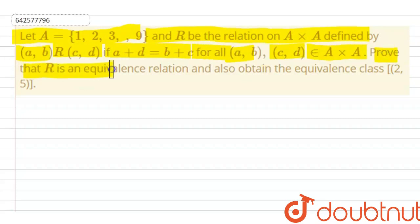We have to prove that R is an equivalence relation and also obtain the equivalence class for (2,5). To identify this equivalence, we must prove that R is reflexive, symmetric, and transitive.